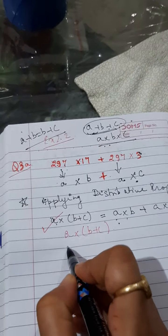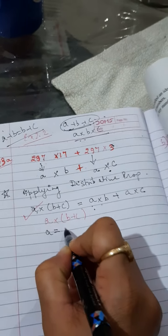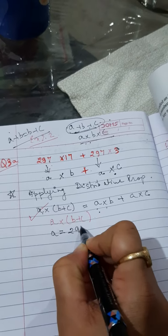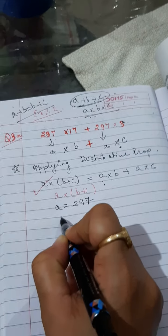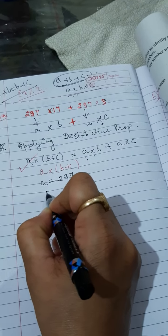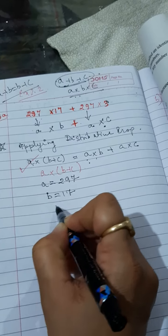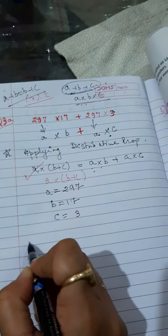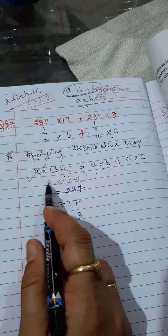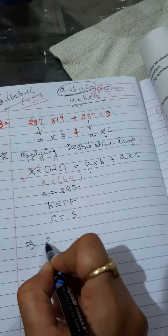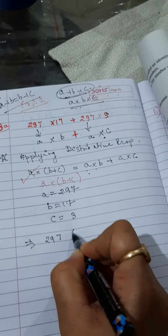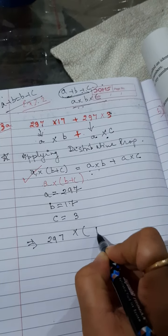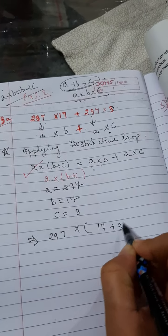Now, what is the value of a? Value of a is 297. What is the value of b? It is 17. And value of c is 3. Now, put the values. a means 297 into b, 17 plus 3.